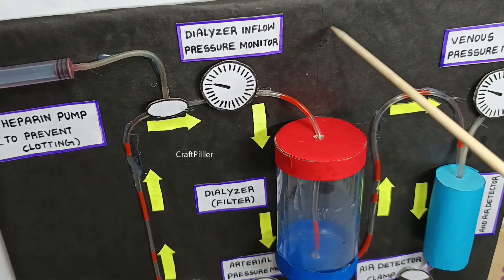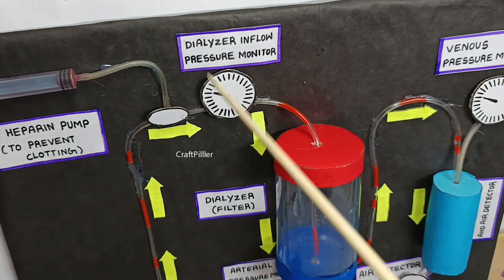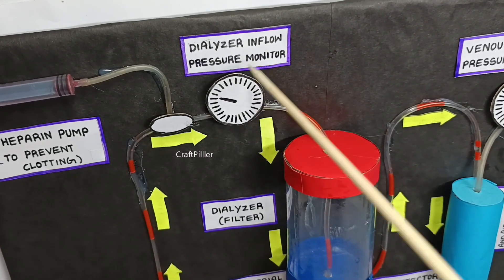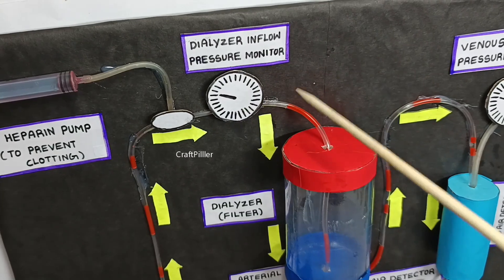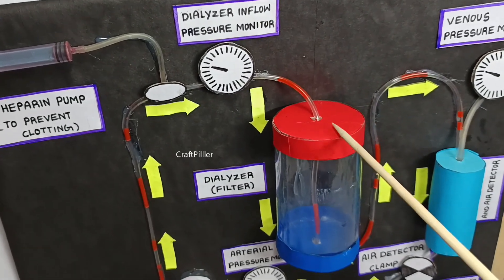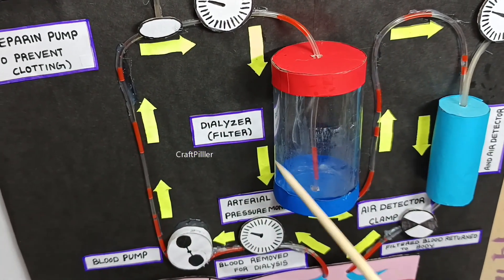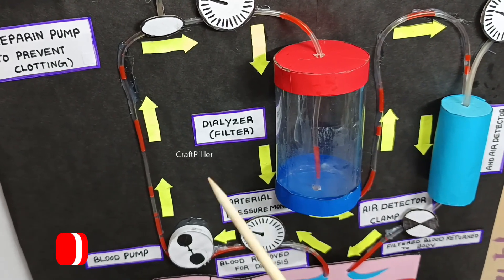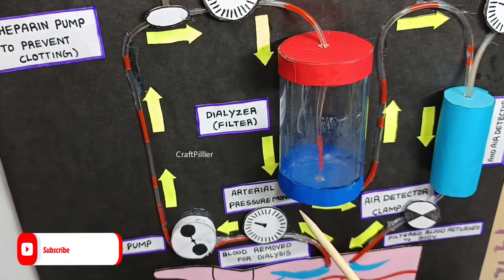And also there is a pressure monitor. If you can see right here, there is a meter that is going to tell us what is the pressure of this inflow of this blood into the dialyzer. Basically, this dialyzer functions to purify the blood by removing all the waste materials as well as excess fluids.